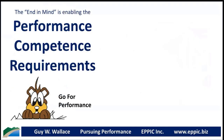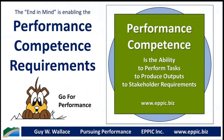So, performance competence requirements. My definition for performance competence is the ability to perform tasks to produce outputs to stakeholder requirements. I borrowed the word 'competence' from the late Tom Gilbert and his 1978 classic book Human Competence. He talked about accomplishments — being accomplishments-based, focusing on accomplishments — and within that he talked about worthy outputs.